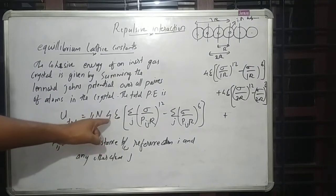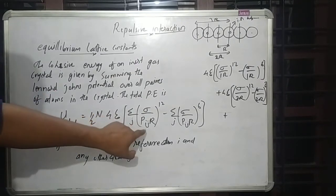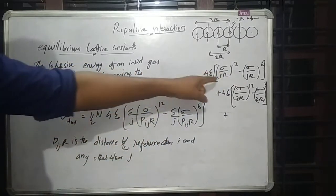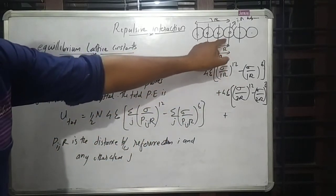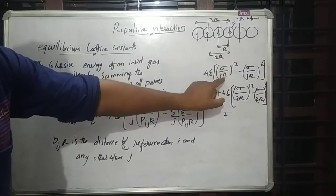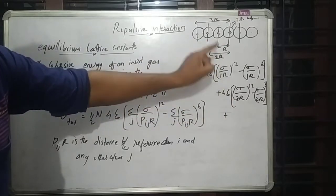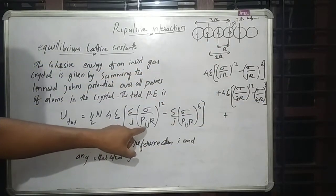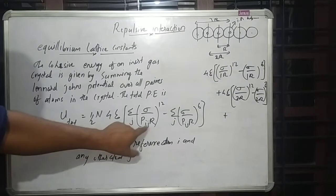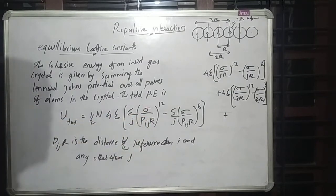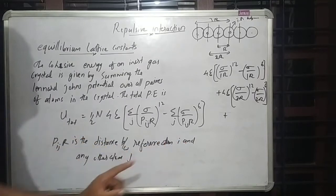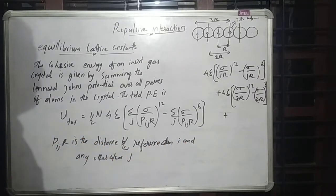We can use this relation where p_ij represents the dimensionless distance factor: the distance between reference atom i and neighbor atom j divided by R. So the distance 1R corresponds to p_ij equals 1, distance 2R corresponds to p_ij equals 2, and so on. p_ij is the distance between reference atom i and any other atom j.